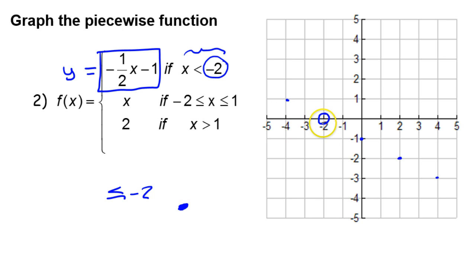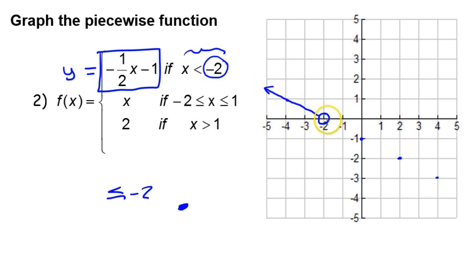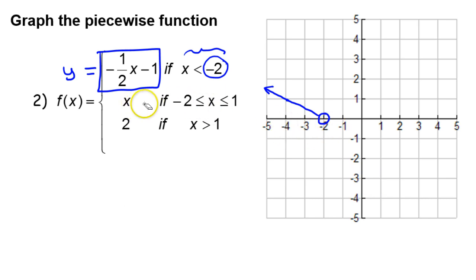We want x values less than negative two, so I'm going to draw only the left side of the line, because that's where the x values are less than negative two. The points plotted to the right of negative two have x values greater than negative two, so we won't use the function there — I'll erase those. That's the first piece of our piecewise function graphed.